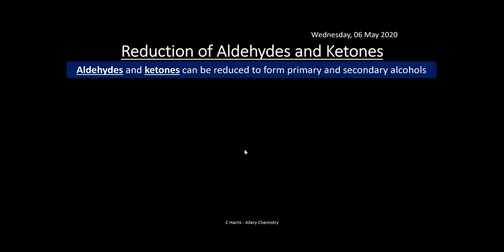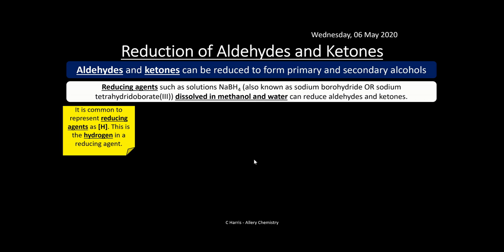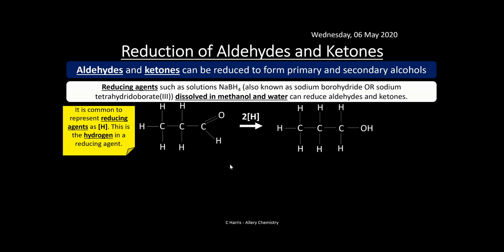Aldehydes and ketones can be reduced to form primary and secondary alcohols respectively. Reducing agents such as sodium borohydride — also known as sodium tetrahydroborate, NaBH₄ — dissolved in methanol and water can reduce aldehydes and ketones. It's common to represent reducing agents as [H] in square brackets, just as oxidising agents are represented as [O] in square brackets.